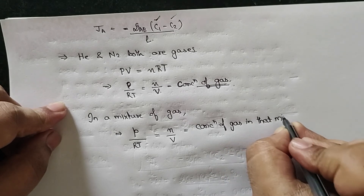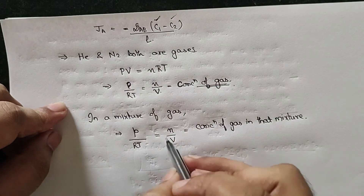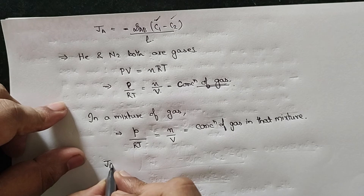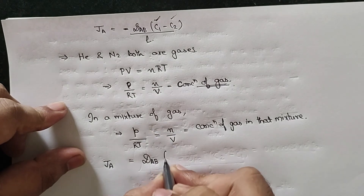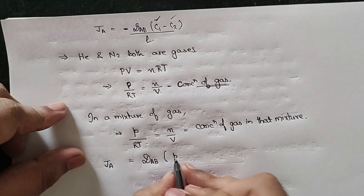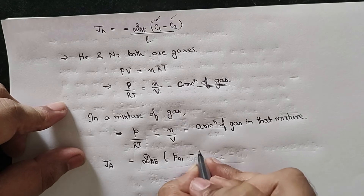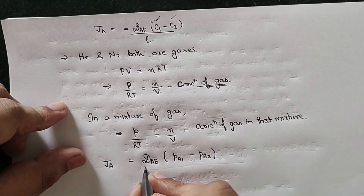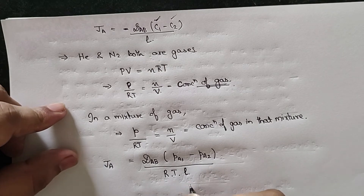Substituting this into Fick's law, the final formula becomes: J_A = D_AB × (P_A1 − P_A2) / (R × T × L), where P_A1 and P_A2 are the partial pressures of component A at points one and two respectively, and L is the distance between both points.